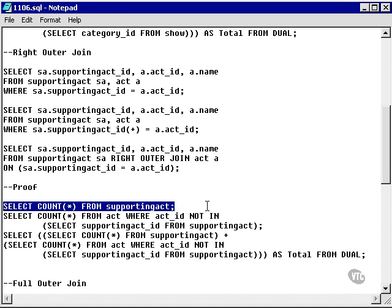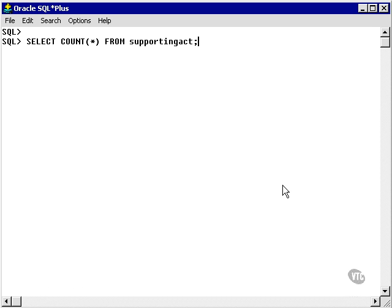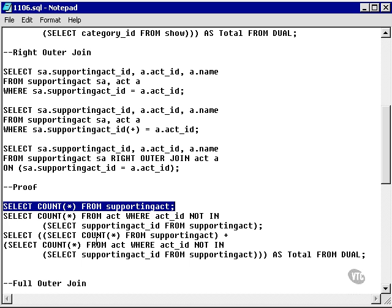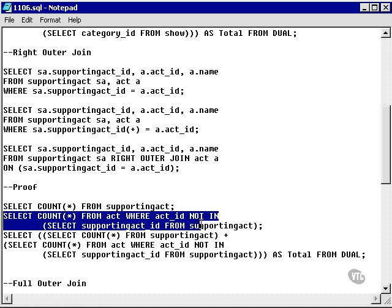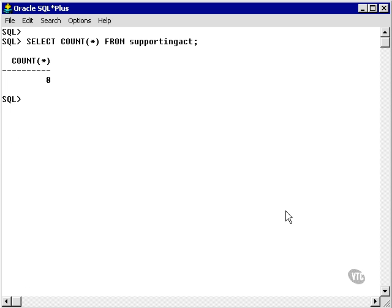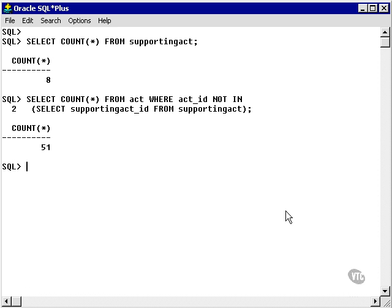I'm going to do the same process I did with the left outer join. I'm going to count the rows in the supporting act table. I have eight. I'm now going to count all the rows in the act table which do not occur in the supporting act table. I have 51 acts with no supporting acts.